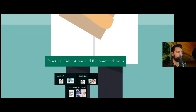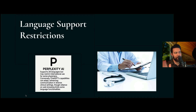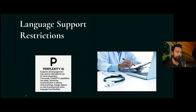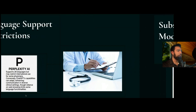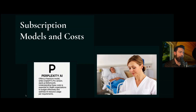Moving to practical limitations: Perplexity supports 28 languages but may restrict international use for some physicians. Conversely, ChatGPT can adapt and enhance communication in diverse clinical settings, though reliance on web browsing limits some of its language functionalities. In terms of subscription models and cost, both the ChatGPT Pro and Perplexity Plus plans are about $20 a month.